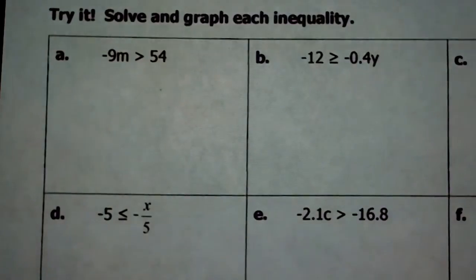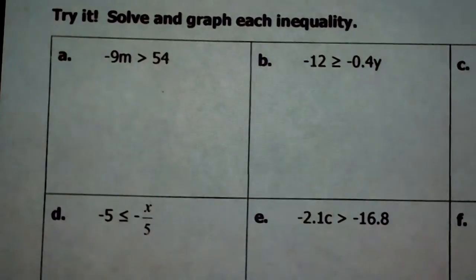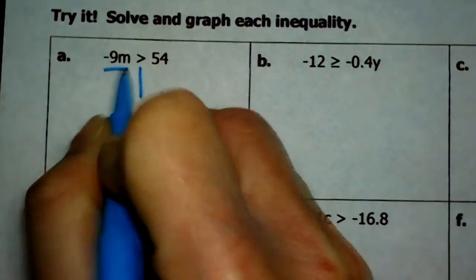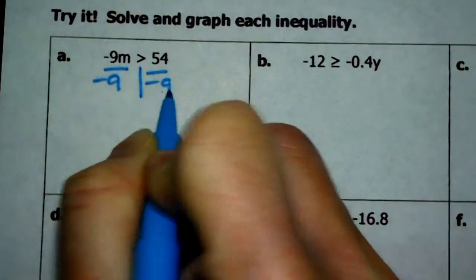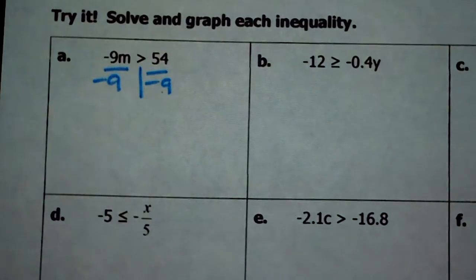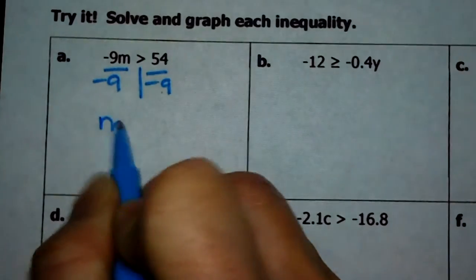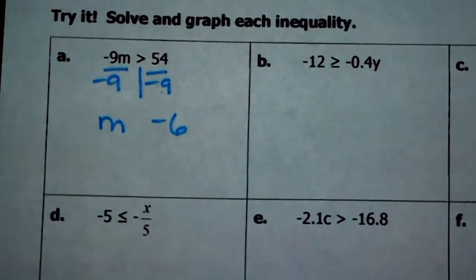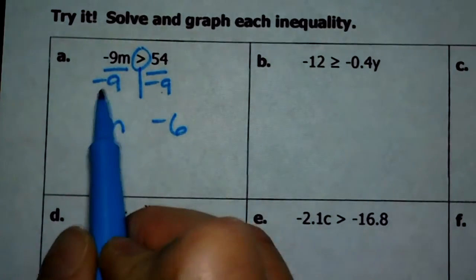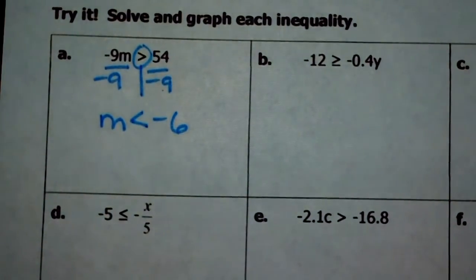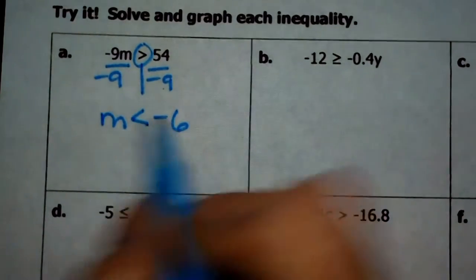All right, for letter A, I have negative 9m is greater than 54. So in this one, I would have to divide by negative 9 in order to get m by itself. Because I am dividing by a negative, once I get m equals negative 6, instead of m being greater than, because I divided by negative 9, I have to switch it to m is less than negative 6.